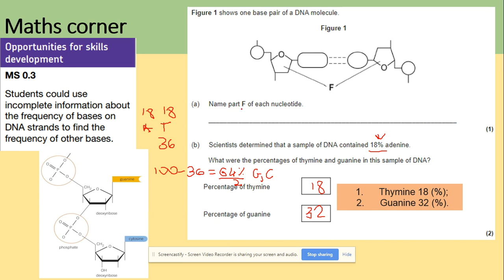Here we need to name the part of the nucleotide labeled. Obviously it's a sugar but you need to be specific. If you're talking about a DNA molecule, it's deoxyribose.